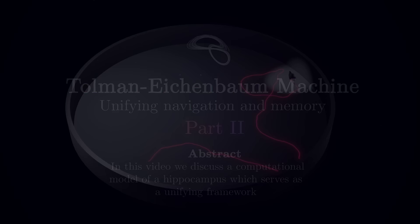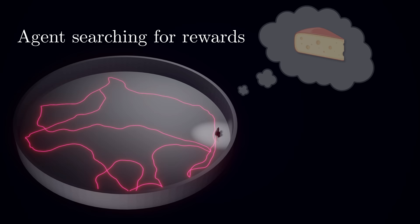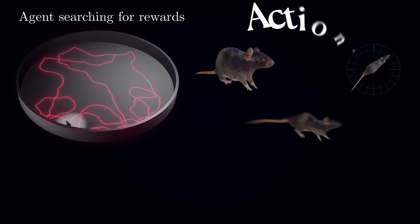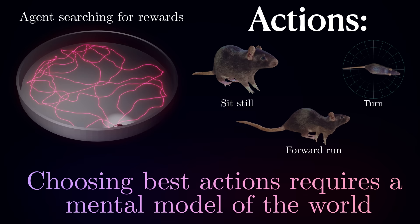Imagine you are an agent that walks around the world whose only goal is to find rewards. From an evolutionary perspective, you can think about such an agent as an early organism which needs to look for food or mates. As an agent, you have a certain repertoire of actions you can take — for example, activating a sequence of muscles to move in a particular direction. To choose the most rewarding actions, you need to be able to predict the action outcomes, and that effectively requires a mental model of the surrounding environment.